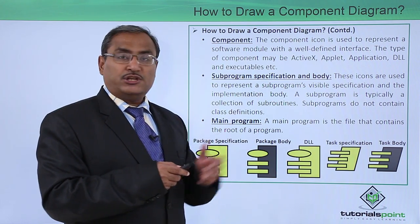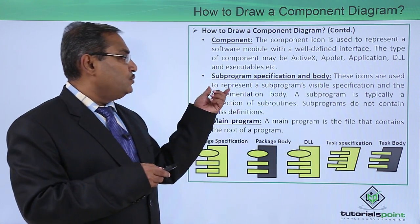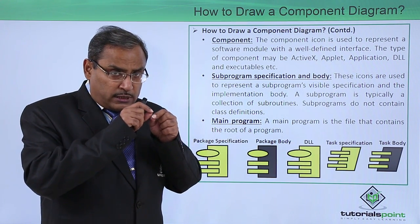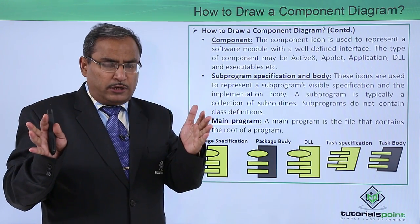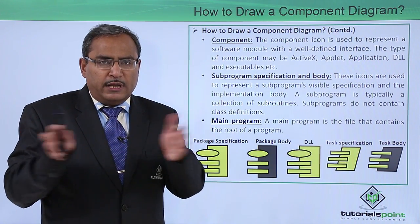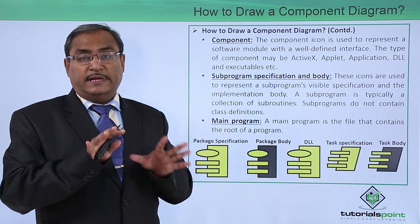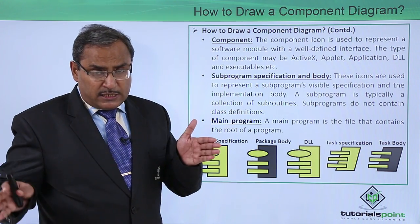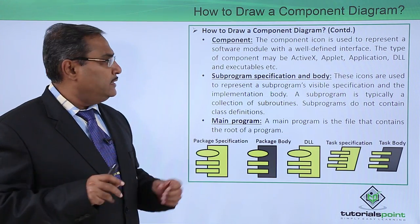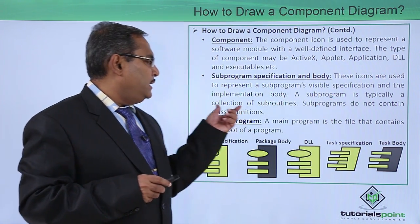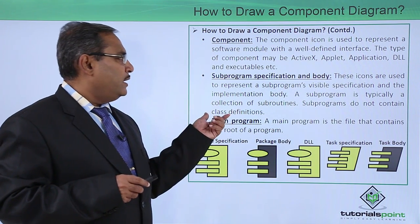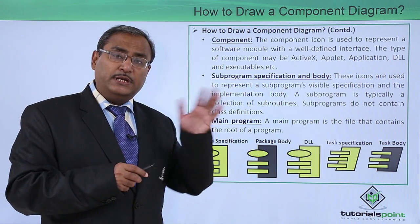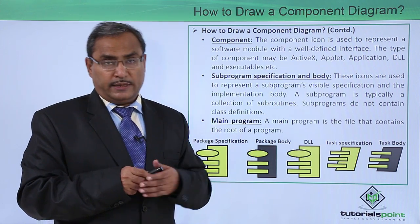We have the subprogram specification and subprogram body. These icons are used to represent a subprogram's visible specification and implementation body. Visible means what are the respective signatures — because library files will contain the subprogram body written in binary language, remaining invisible for the normal view, but the specification is visible, meaning we can open it and read the details. A subprogram is typically a collection of subroutines. A subprogram does not contain class definitions — class definitions will be in the respective classes, and those class names will be in the respective package.